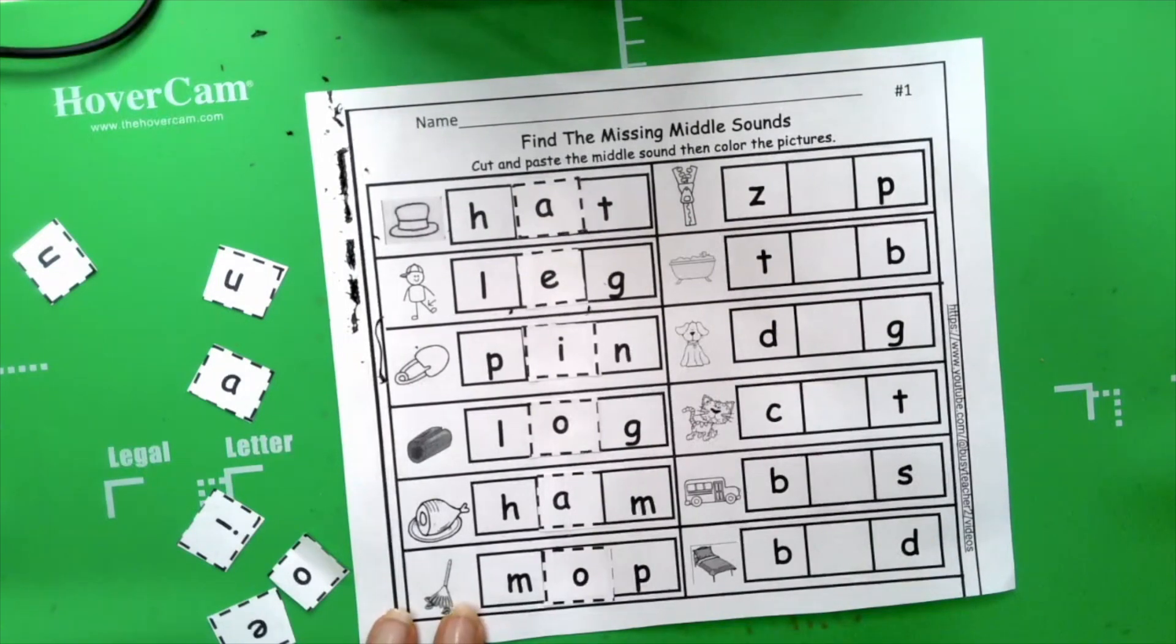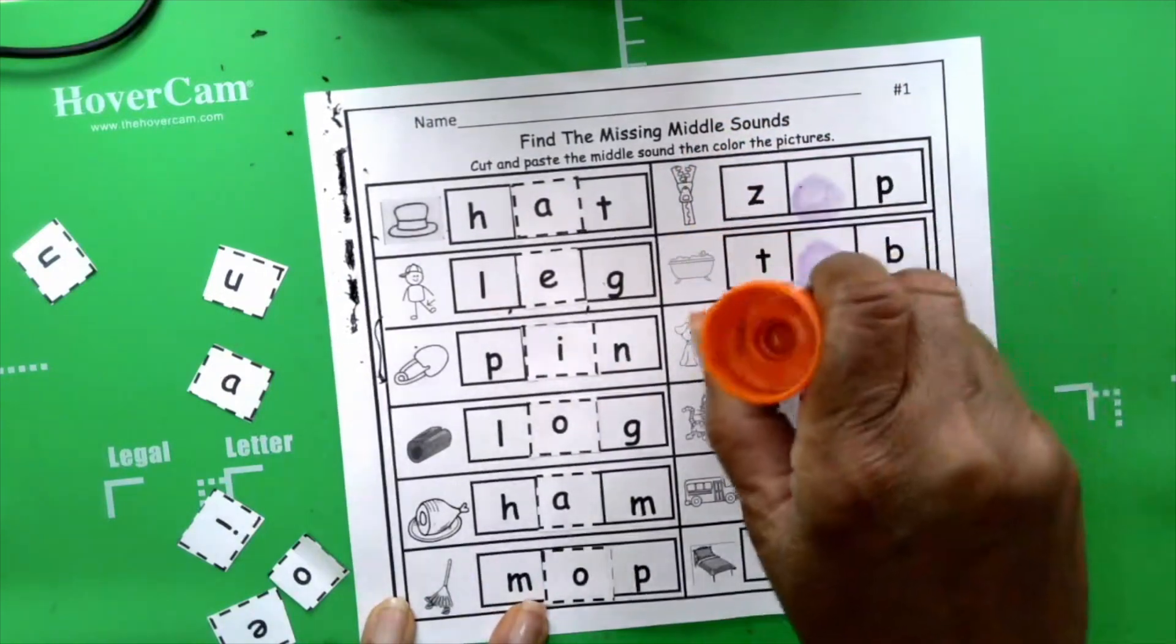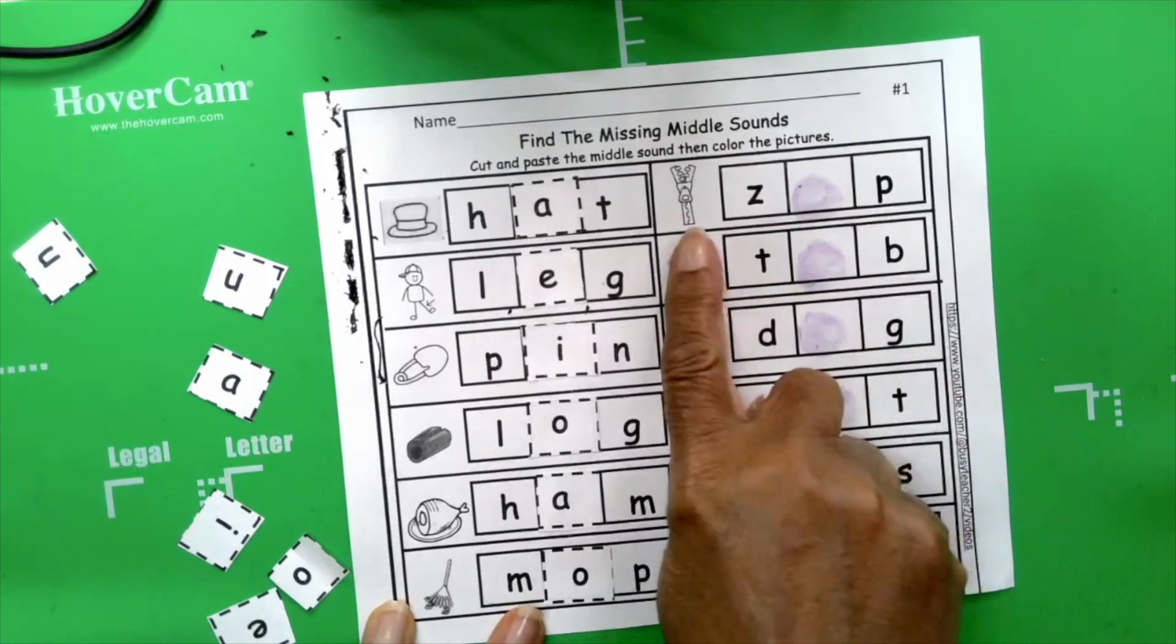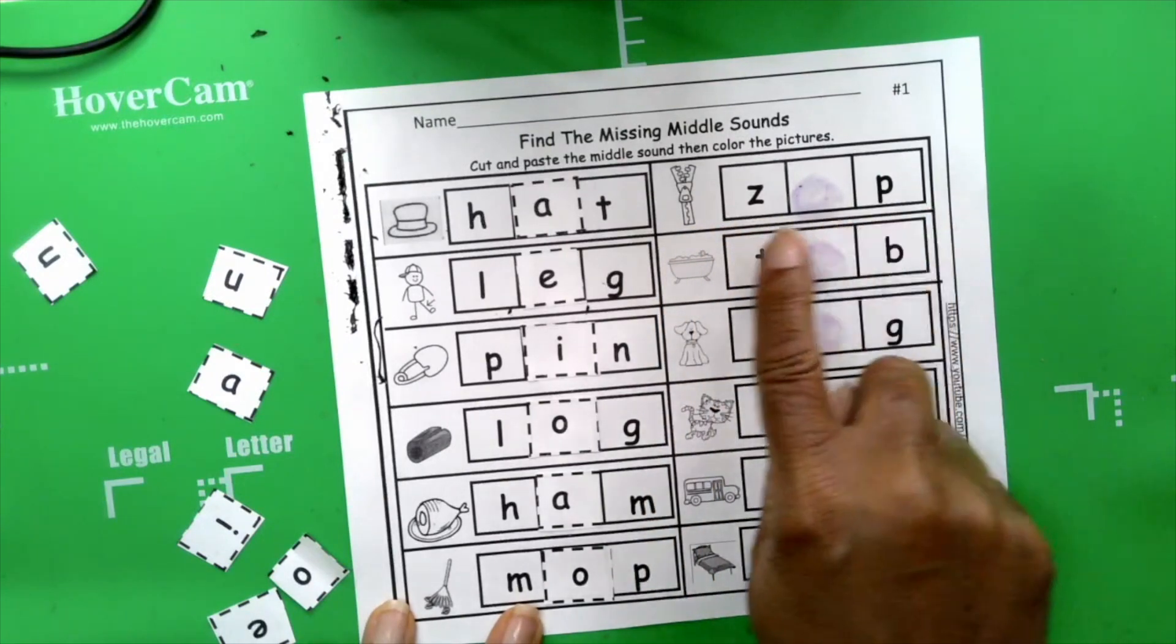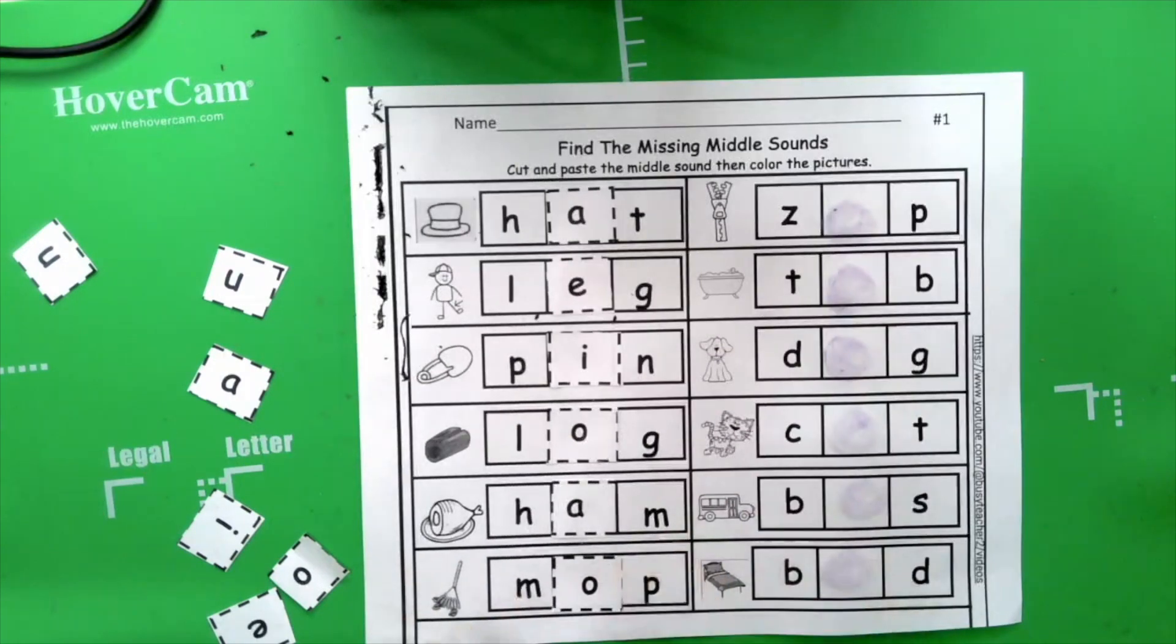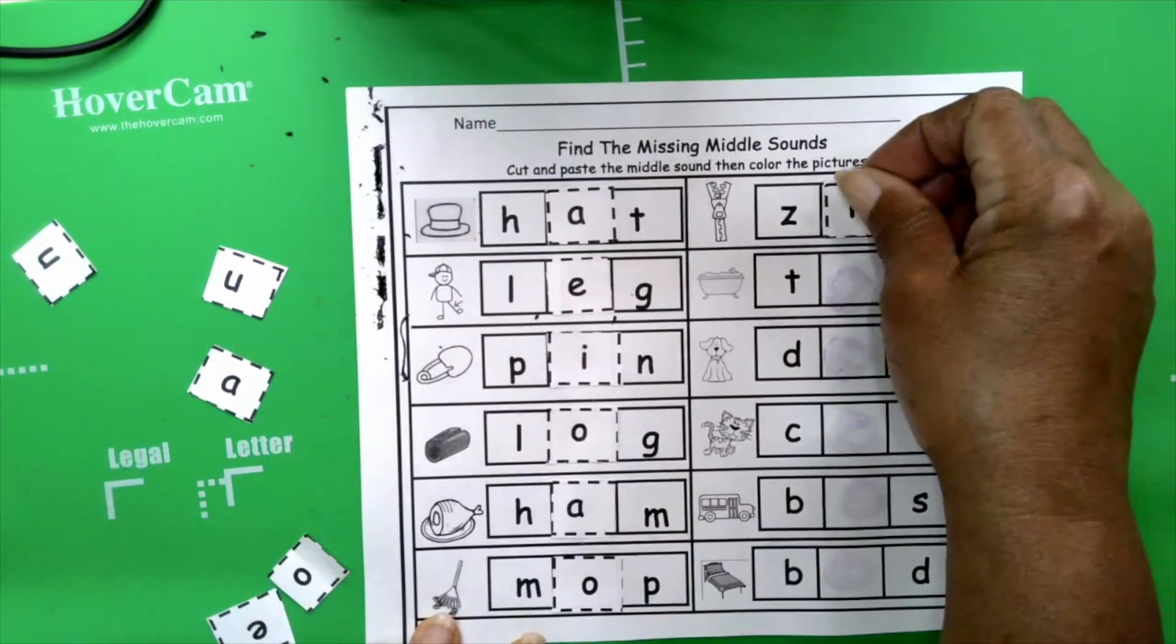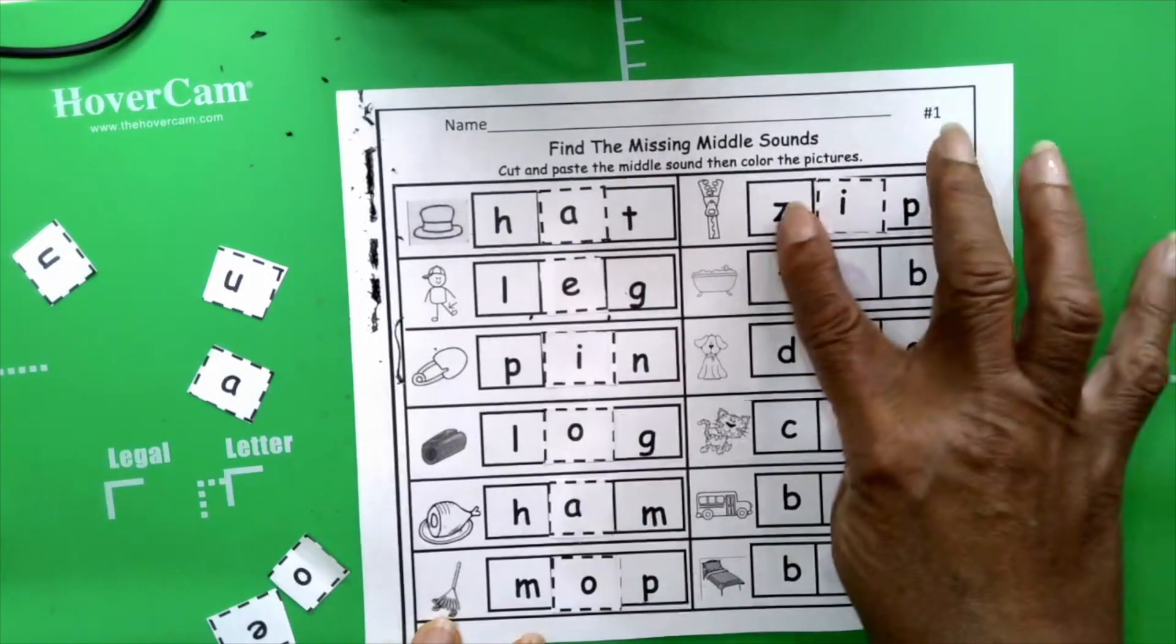Okay. You're going to need your glue stick. So we're going to give it a swirl all the way down. Very good. The first picture is zip. Z. I. P. Zip. I. We're looking for I. I. Here it is. I. I makes the sound i. Zip. Zip. Zip.